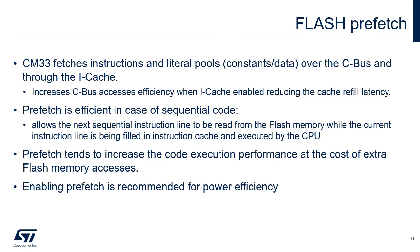The Cortex-M33 fetches instructions and literal pool constants over the CBUS and through the instruction cache if it is enabled. The pre-fetch block increases the efficiency of CBUS accesses when the instruction cache is enabled by reducing the cache refill latency. Pre-fetch is efficient in the case of sequential code. Pre-fetch in the flash memory allows the next sequential instruction line to be read from the flash memory while the current instruction line is being filled in instruction cache and executed by the CPU. Pre-fetch is enabled by setting the PRFTEN bit in the flash access control register, Flash ACR. PRFTEN must be set only if at least one wait state is needed to access the flash memory. Note that pre-fetch tends to increase the code execution performance at the cost of extra flash memory accesses, but power efficiency is better thanks to the increased performance.